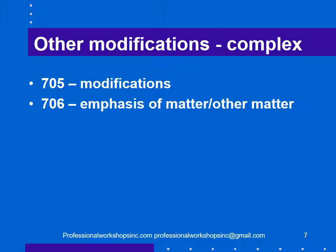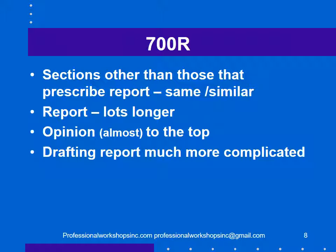Modifications to the standard audit report are complex, and emphasis of matter and other matter paragraphs are complex — I will have other modules on those topics. What makes this ISA 700 revised is the changes that have occurred. The sections other than those prescribing the report are not much different — either exactly the same or similar to before. The report, however, is lots longer. One intention was to get the opinion to the top, so the old identification paragraph — saying we've audited the balance sheet, income statement, and notes — is at the top, immediately followed by the opinion paragraph.